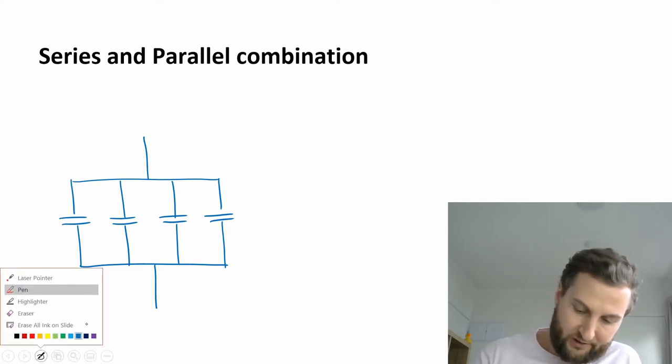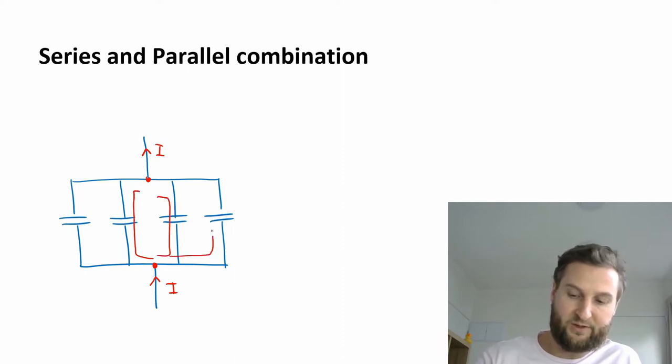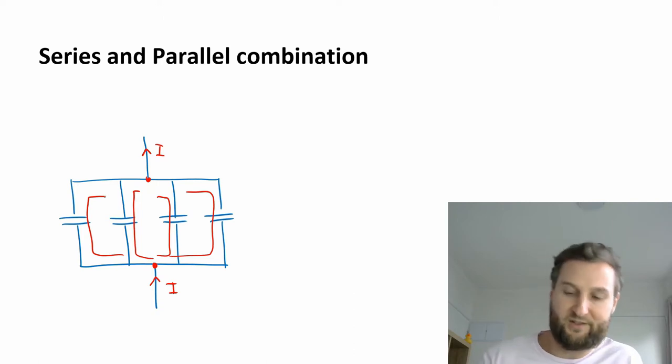Let's label some current, and now we know that current branches at the nodes, so we've got a node here and a node here, and we'll have current coming out. Current will branch through each of these independent branches with these capacitors in them.